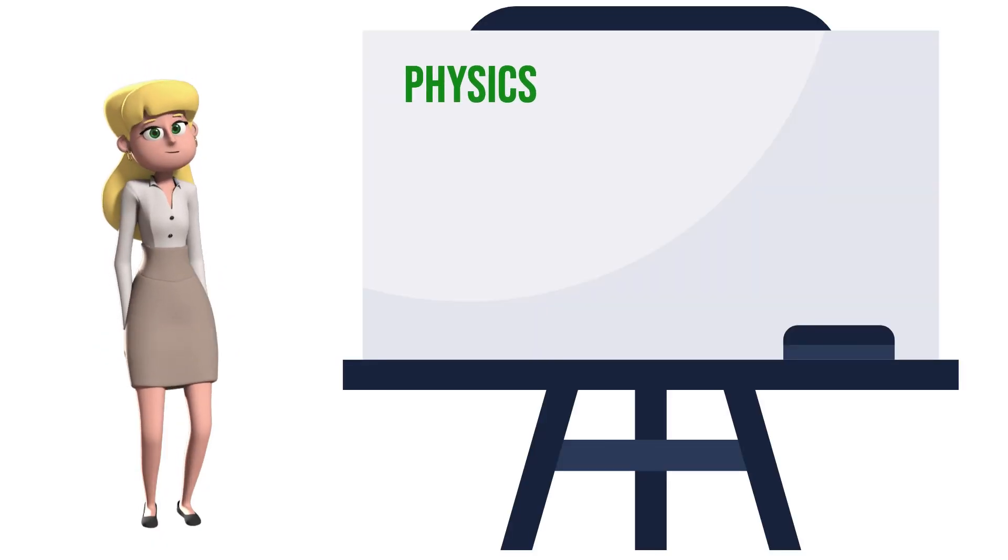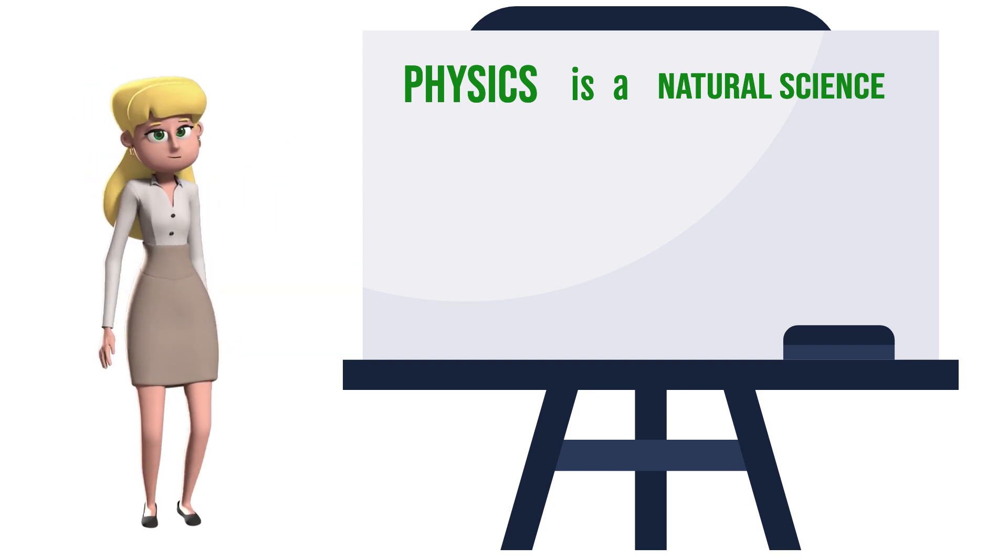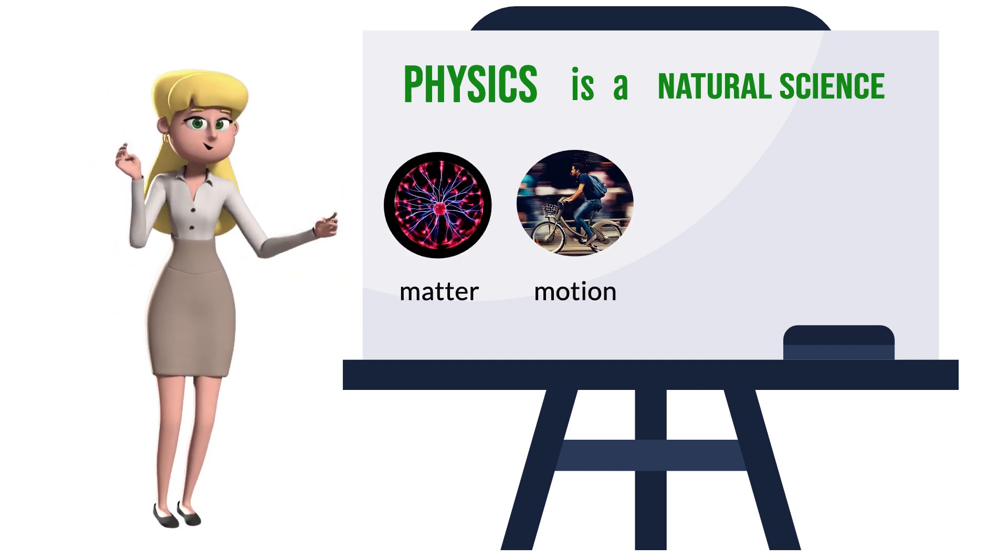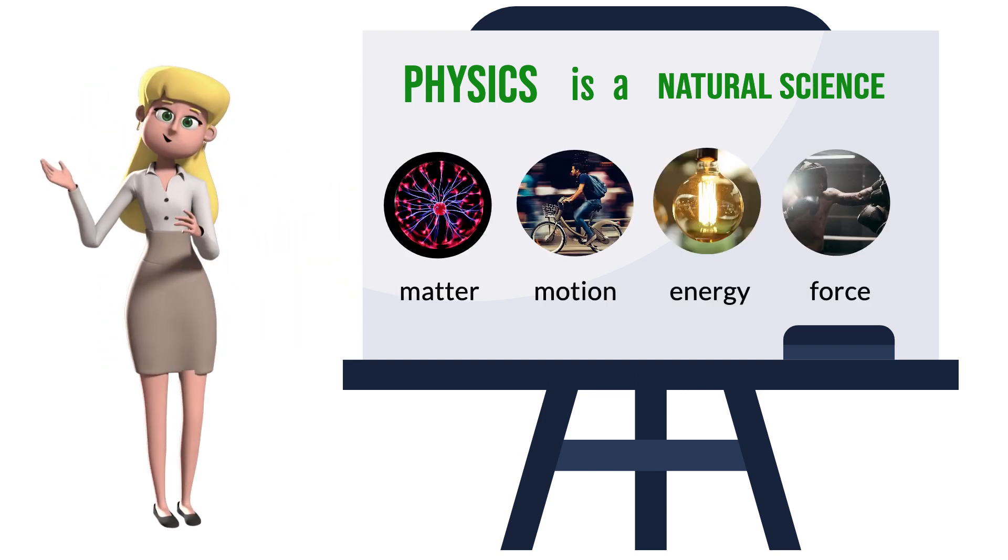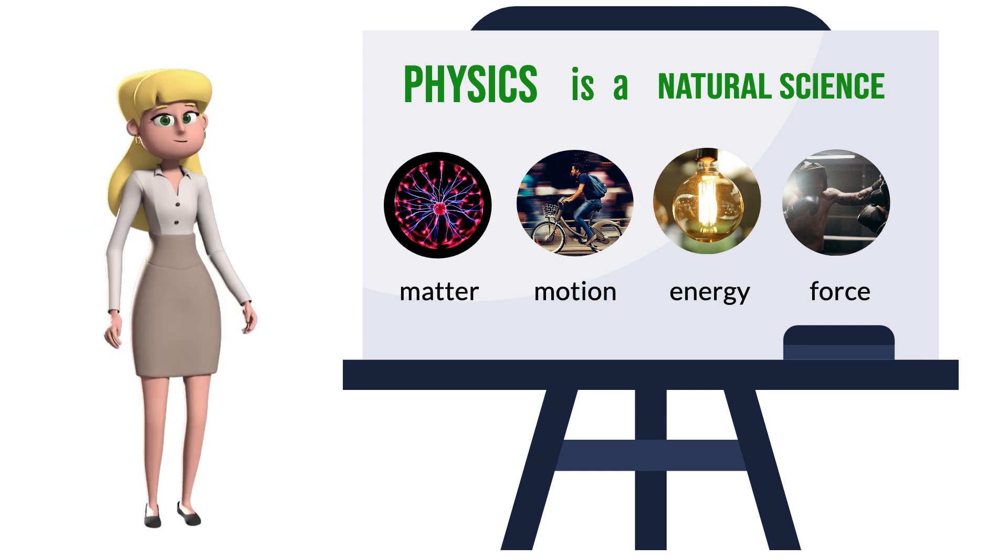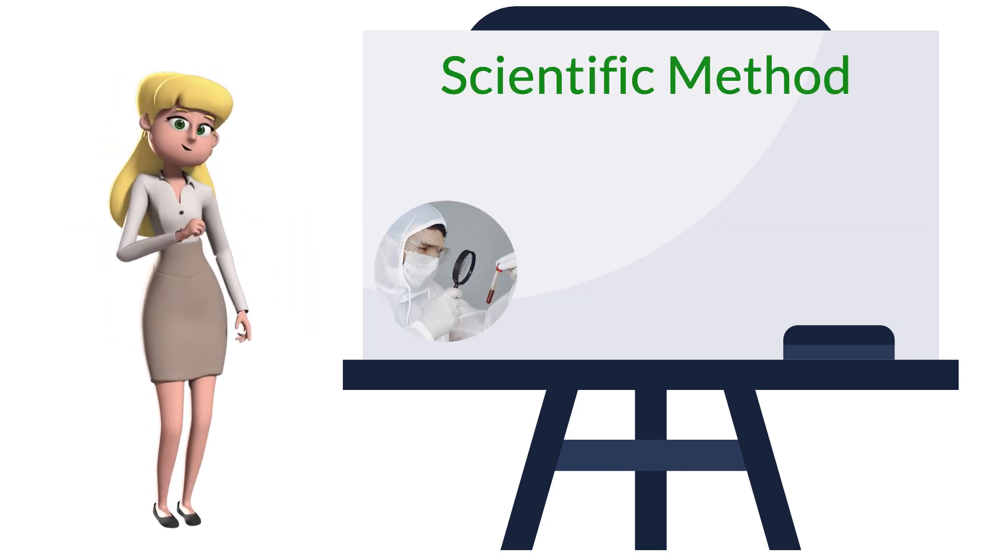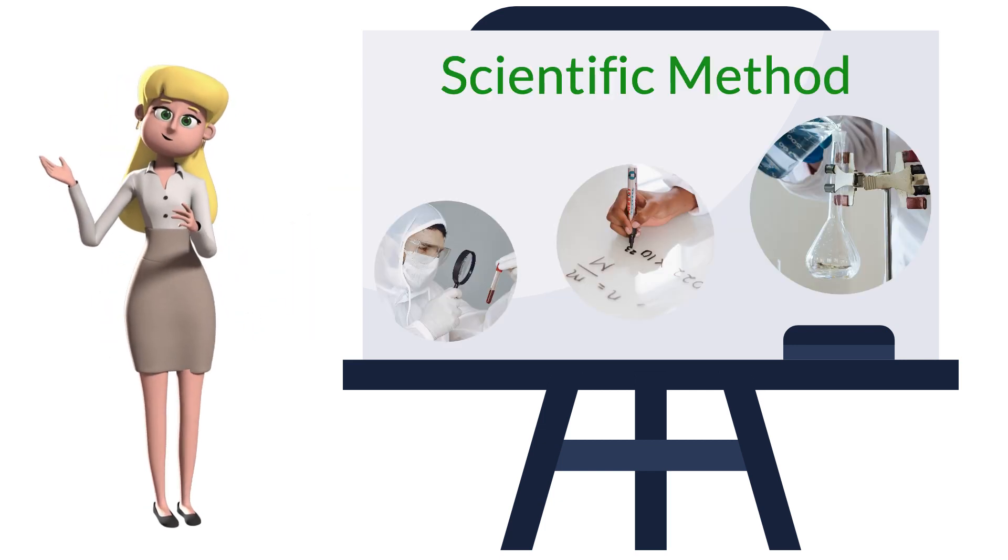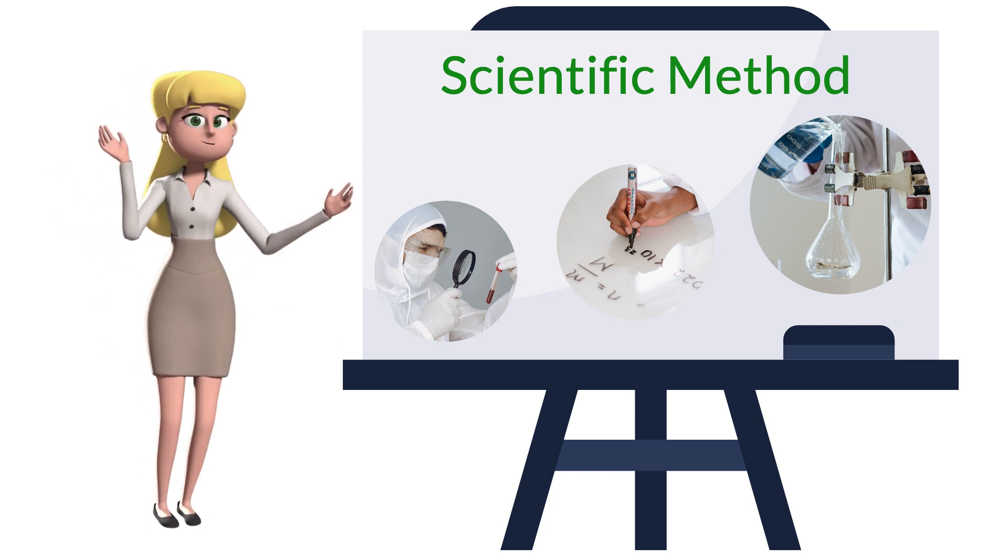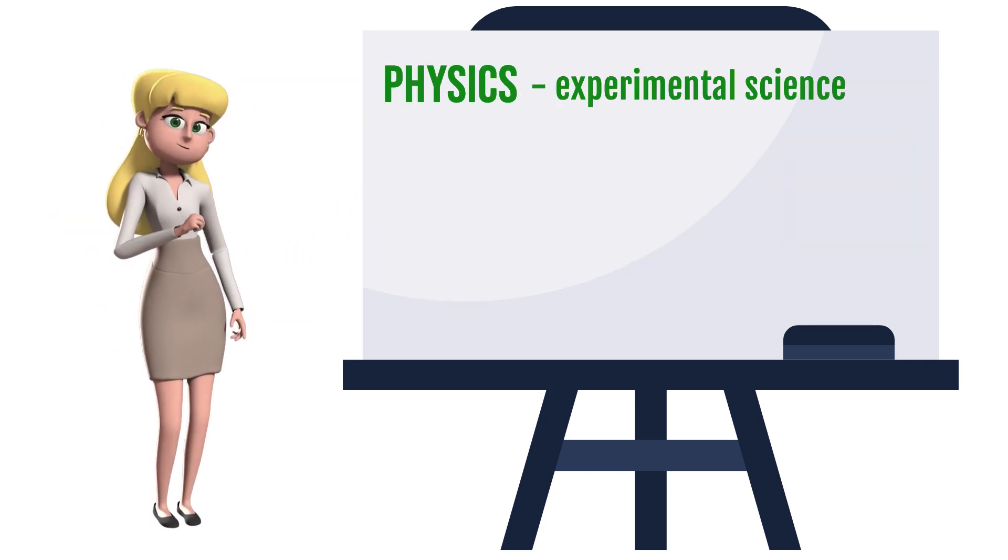To start with, physics is a natural science that involves the study of matter and its motion through space and time, along with related concepts such as energy and force. Physics uses a scientific method to help uncover its basic principles. That is why physics is also an experimental science.